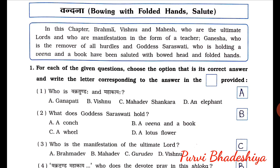For each of the given questions, choose the option that is its correct answer and write the letter corresponding to the answer in the box provided. First one: who is Vakratundah and Mahakayah? The answer is A — Ganpati.